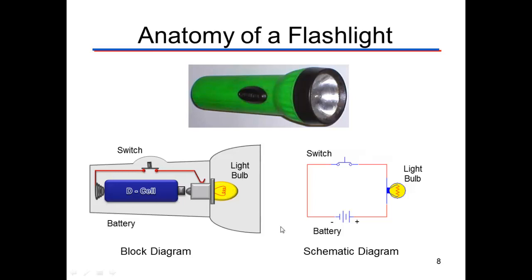If we represented that in a schematic, it would look like this. This would be the load or the resistance. This would be the switch. And this would be the battery or the voltage source. This gives you three different ways we can look at a flashlight.